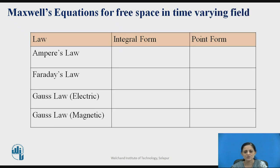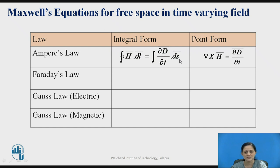Similarly, we can define all Maxwell's equations for time-varying fields. For Ampere's law, the equation is: ∮H̄·dl̄ = ∫(∂D̄/∂t)·dS̄. Here D̄ is the flux density, differentiated with respect to time and integrated with respect to the surface. So ∂D̄/∂t is the field which varies with respect to time. In point form: ∇×H̄ = ∂D̄/∂t.